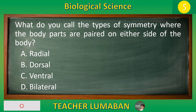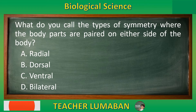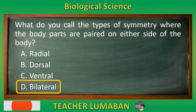5, 4, 3, 2, 1. The correct answer is Letter D: Bilateral. The type of symmetry where the body parts are paired on either side of the body is called bilateral.